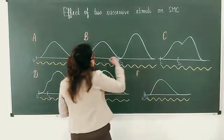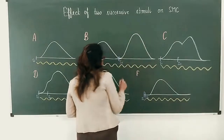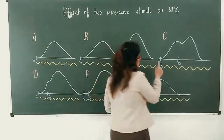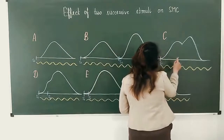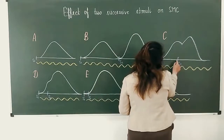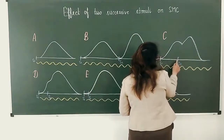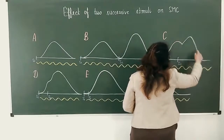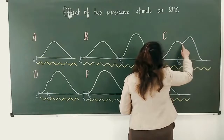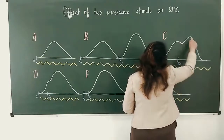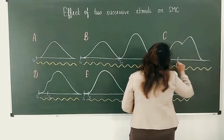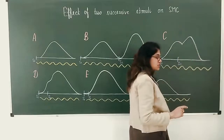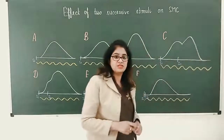Here we can see the height of the second curve is much more than the first curve. In the third curve, the second stimulus is being given in the relaxation phase of the first one, so we can see an M-shaped curve is obtained. The first peak is because of the first stimulus, the second peak is because of the second stimulus, and the height of the second peak is more than the first — again because of the beneficial effect.